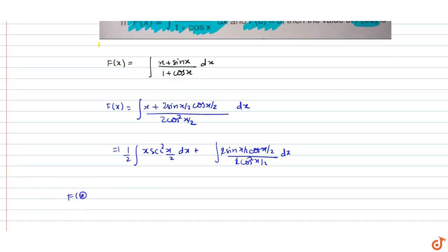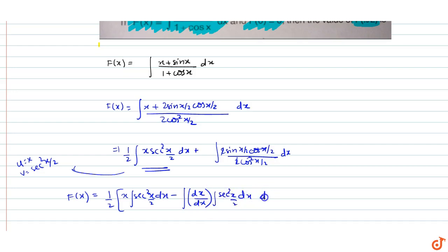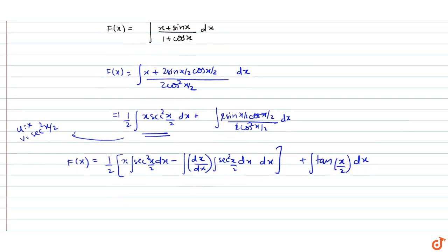So f(x) — here we use integration by parts. We take the first function u as x and v as sec²(x/2). So we get: (1/2) · [x · integral of sec²(x/2) dx − integral of (d/dx(x) · integral of sec²(x/2) dx) dx] plus the integral of tan(x/2) dx.